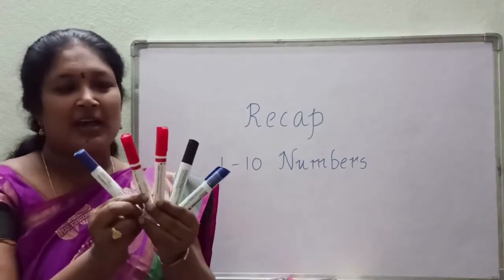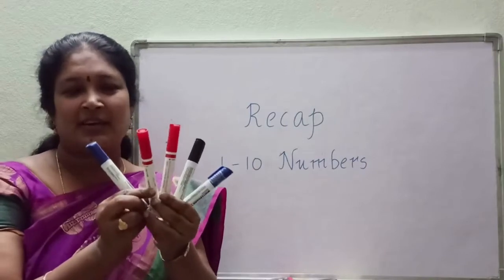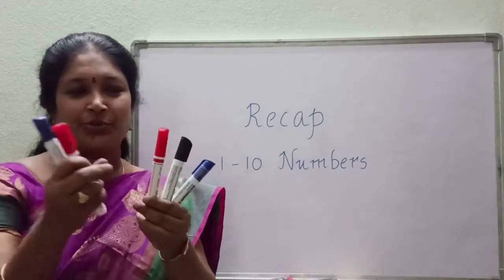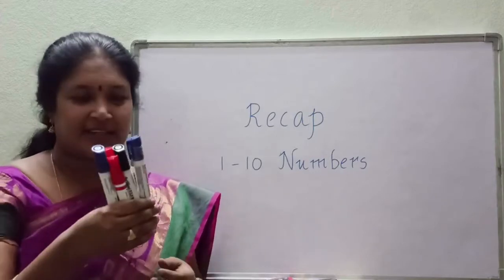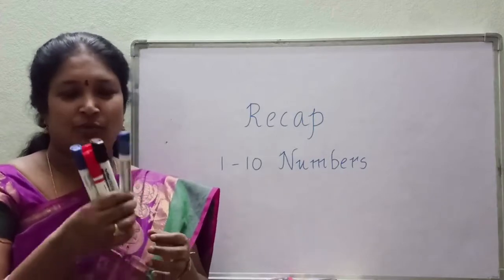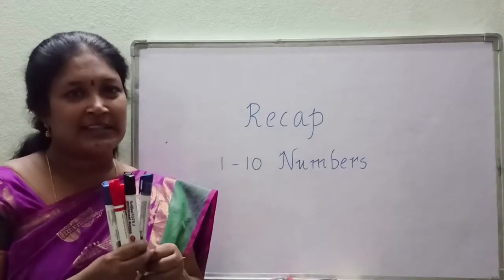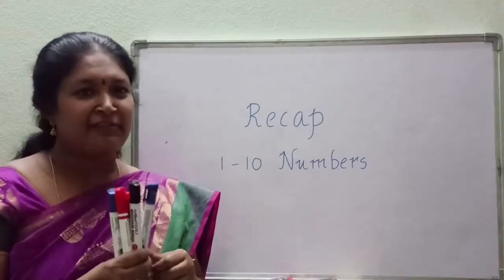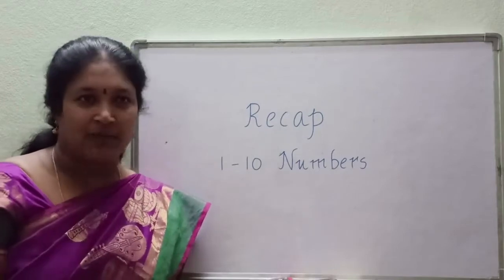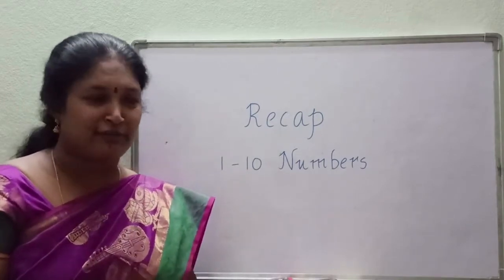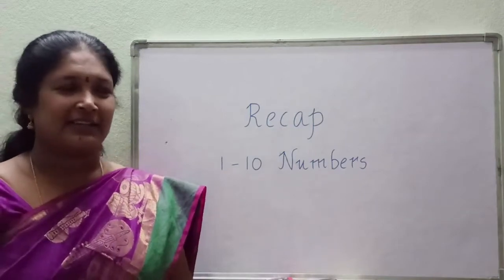So here how many markers are there? 1, 2, 3, 4, 5. 5 markers are there. So we represent these 5 markers with the number 5. What is the spelling of 5? F-I-V-E. What is the forward counting of 5? 5, 6, 7, 8, 9. Like that.